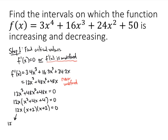That gives us several solutions: 12x equals 0, or x plus 2 equals 0. If 12x equals 0, dividing both sides by 12 gives x equals 0. If x plus 2 equals 0, subtracting 2 from both sides gives x equals negative 2. We got negative 2 twice, but we can ignore the duplicate. Our critical values are 0 and negative 2.